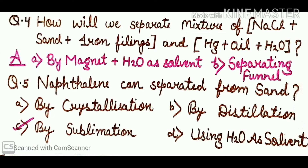Question number 5: how can we separate naphthalene from sand? Options are crystallization, distillation, sublimation, and using water as solvent. We will use the sublimation technique, because naphthalene will directly convert into gas and the sand will remain behind.